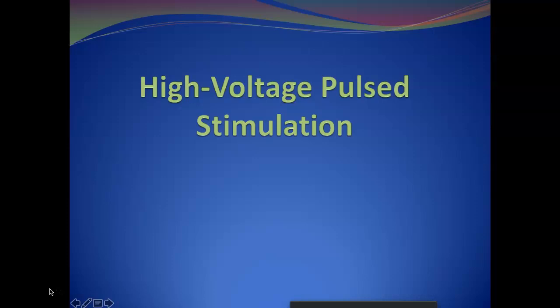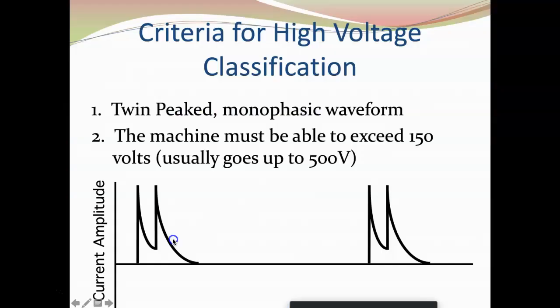Do note that it is the first modality we'll talk about that is monophasic in nature. Our first stop is to talk about its waveform. What we know about high voltage pulse stimulation is that it is a series of what are called twin-peaked waves. The twin peak means their amplitude is the same — that peak and the other peak, they're both the same. So twin-peaked monophasic waveforms.